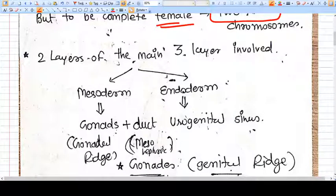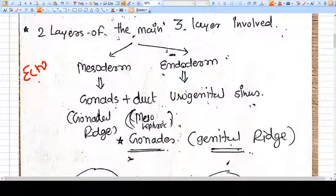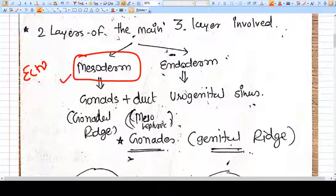Ectoderm, mesoderm, and endoderm. But for male genitalia, two basic parts are needed for development: mesoderm and endoderm.